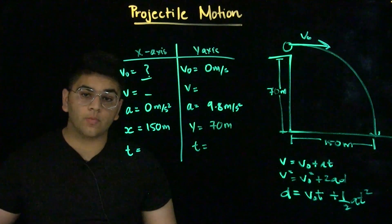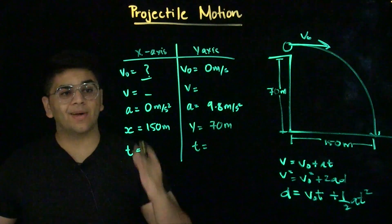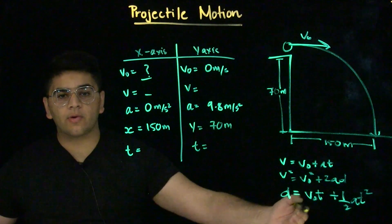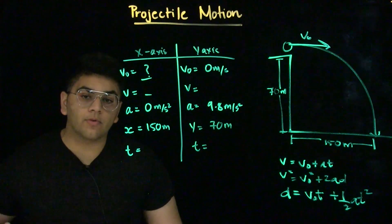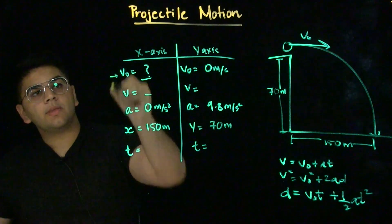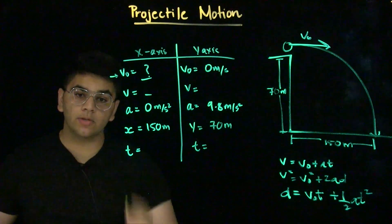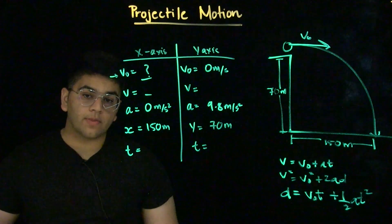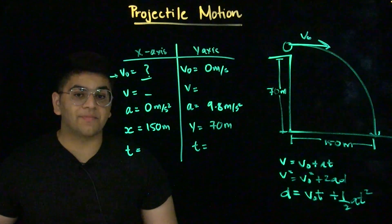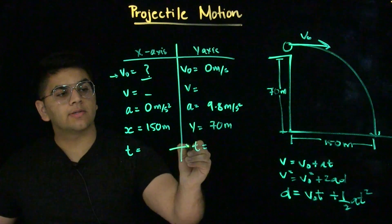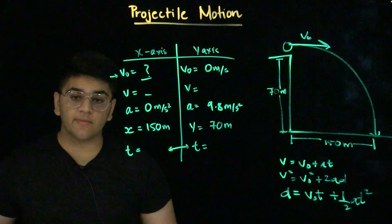An important thing we must keep in mind is we should know at least three of these variables to be able to use these kinematic equations to solve for a fourth variable. The variable we want to know is the initial velocity in the x-axis, but we only know two variables in the x-axis. Now, a great tool that we have is that there's sort of a bridge between the two axes, which is time. Time is the same for both axes.